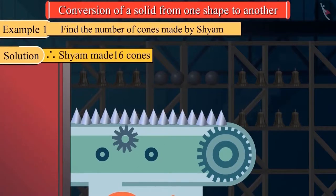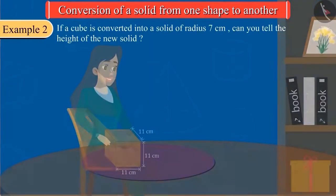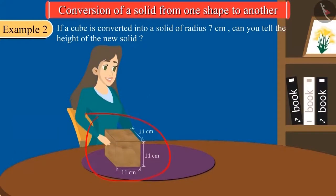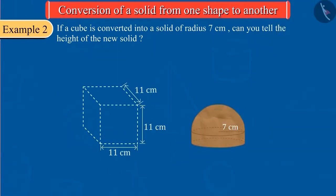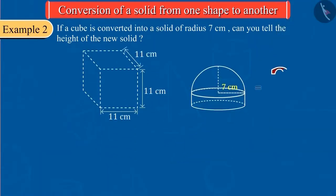Let's look at another example. This cube is made of model making clay. Sanjana transformed this solid into another solid with a radius of 7 cm. Can you calculate the height of this solid?